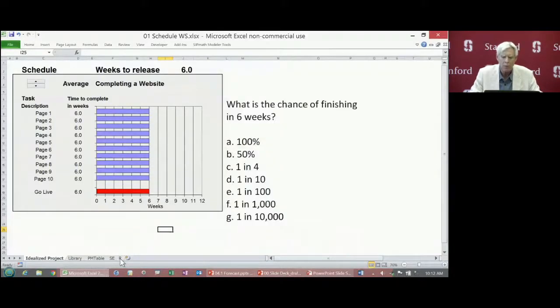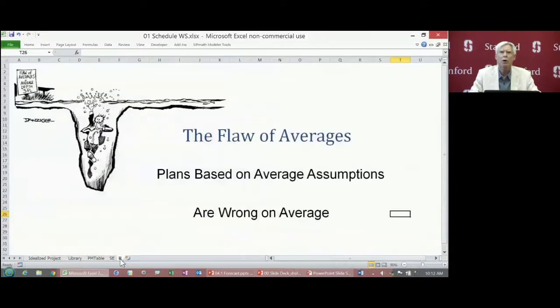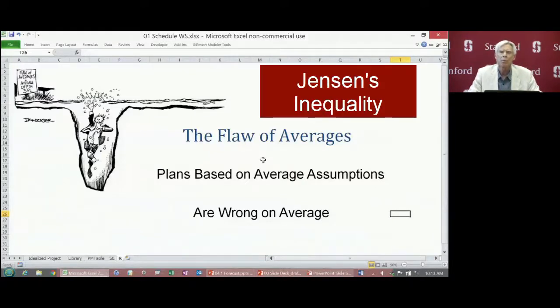This is what I call the flaw of averages. Here's another cartoon from my book. This is a statistician drowning in a river that's on average three feet deep. The flaw of averages states that plans based on average assumptions are wrong on average, and let me say this is based on a well-known mathematical principle called Jensen's inequality, but even most mathematicians haven't heard of that. So, it is a very important topic and it requires some public relations for people to understand it.